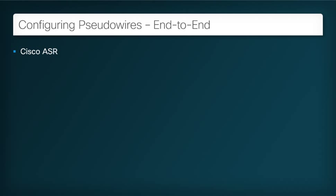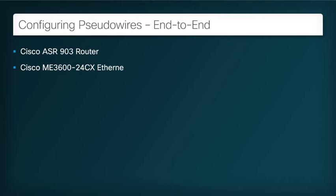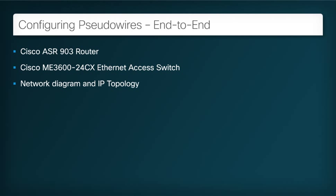In this first video, we will cover the Cisco ASR903 router, the Cisco ME3600-24CX Ethernet access switch, the optimal network diagram and IP topology, and clocking and synchronization flow.